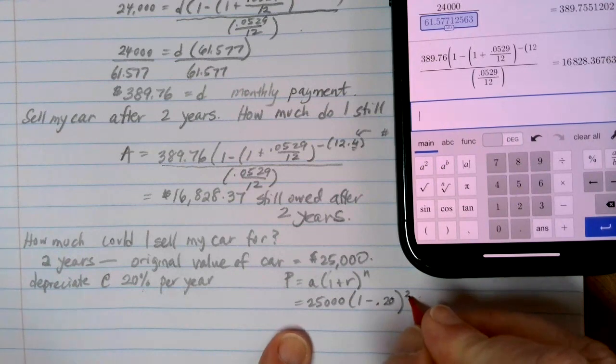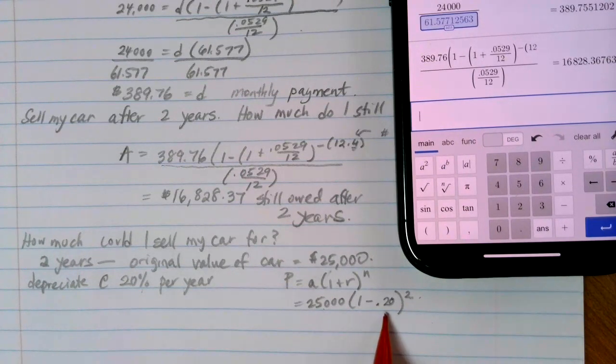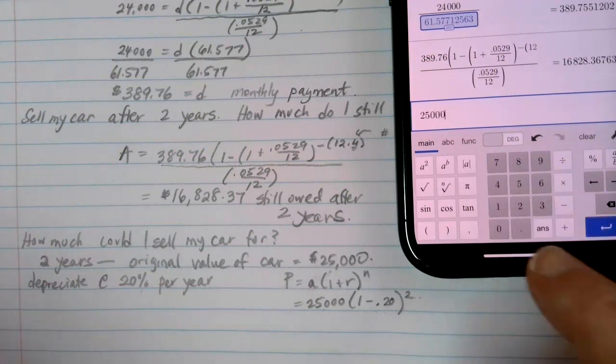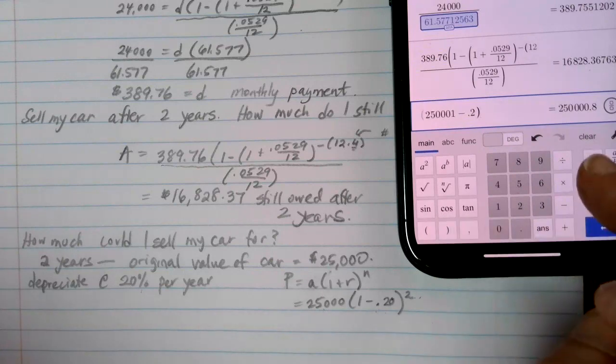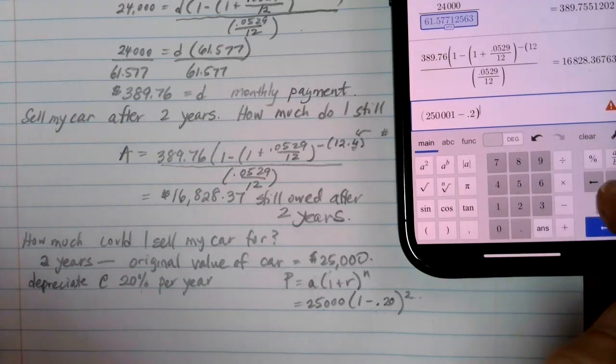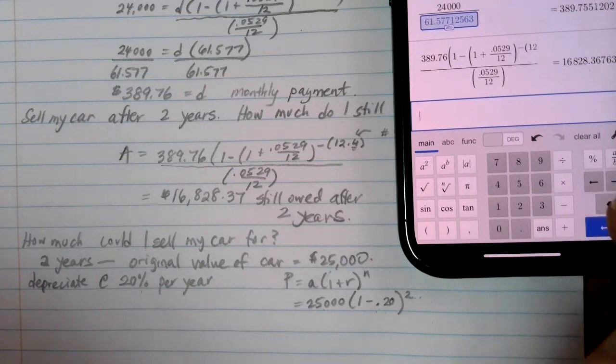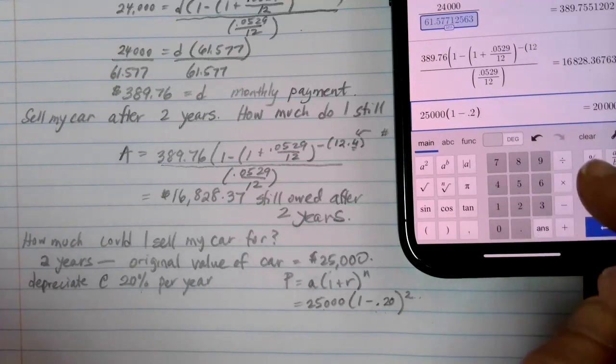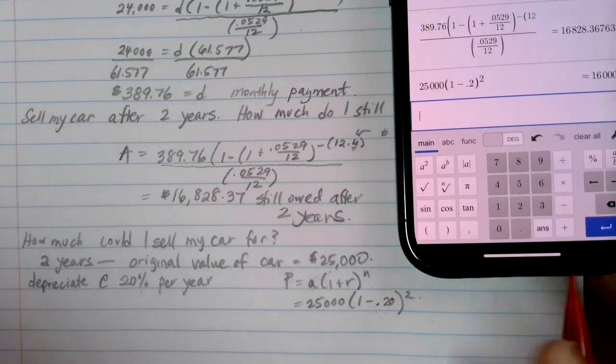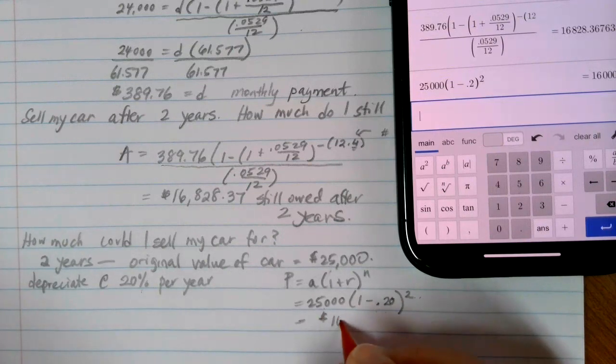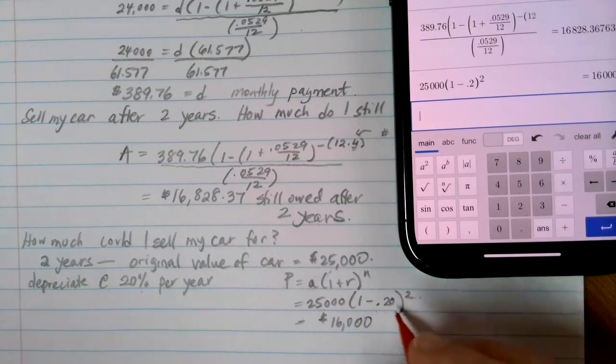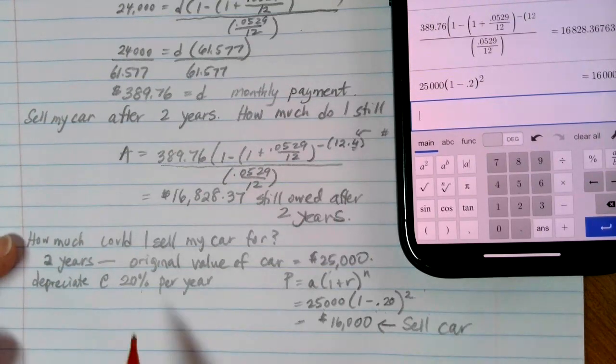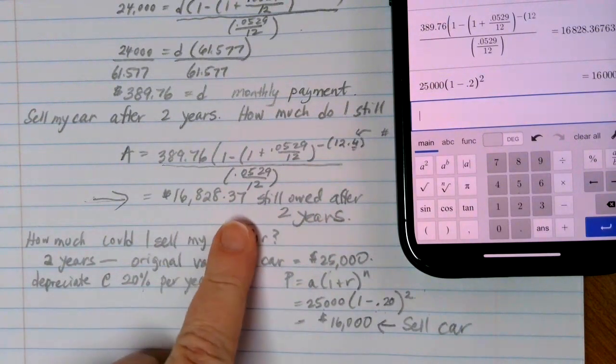This time I'm going to be doing this for two years, so I want to find what the value of my $25,000 car is two years later, losing 20% of its value each year. If I put that in my calculator, I get $25,000 times 1 minus 0.2 to the second power. So I could sell my car for $16,000, but then I still need to pay off the bank, and they want $16,828.37.